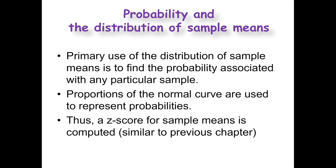The primary use of the distribution of sample means is to find the probability associated with any particular sample. Think back to z-scores — what's the probability of pulling a single score above a z-score of 0.4? We're doing the exact same thing, but now with groups of people versus just one person. The proportions of the normal curve are used, and you can compute from a raw score, get a z-score, and from that z-score get a probability or proportion.